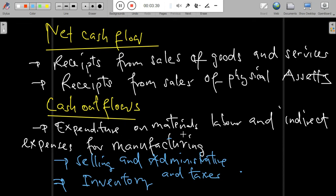For cash outflow, we tend to look at expenditure on materials, labor, and indirect expenses for manufacturing. This includes selling and administrative, inventory, and taxes.